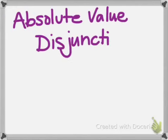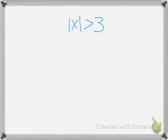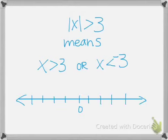That was conjunctions. Now we're going to talk about disjunctions. When we have absolute value disjunctions, we're looking for when the absolute value of x is greater than a value. For example, the absolute value of x is greater than 3 means we're looking at all values greater than 3 or all values less than negative 3. Instead of being graphed in one area, they're graphed in two different areas on the number line.